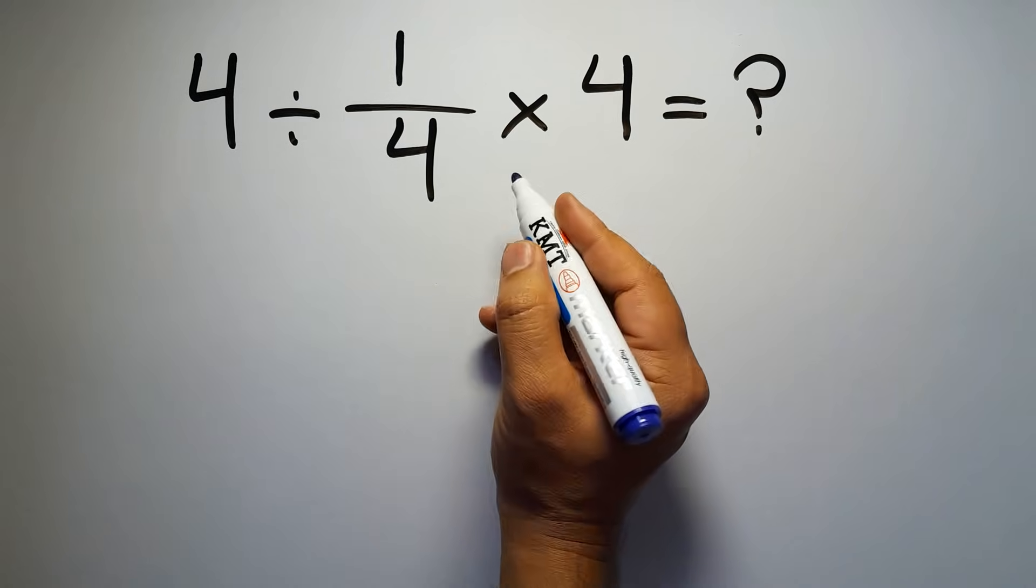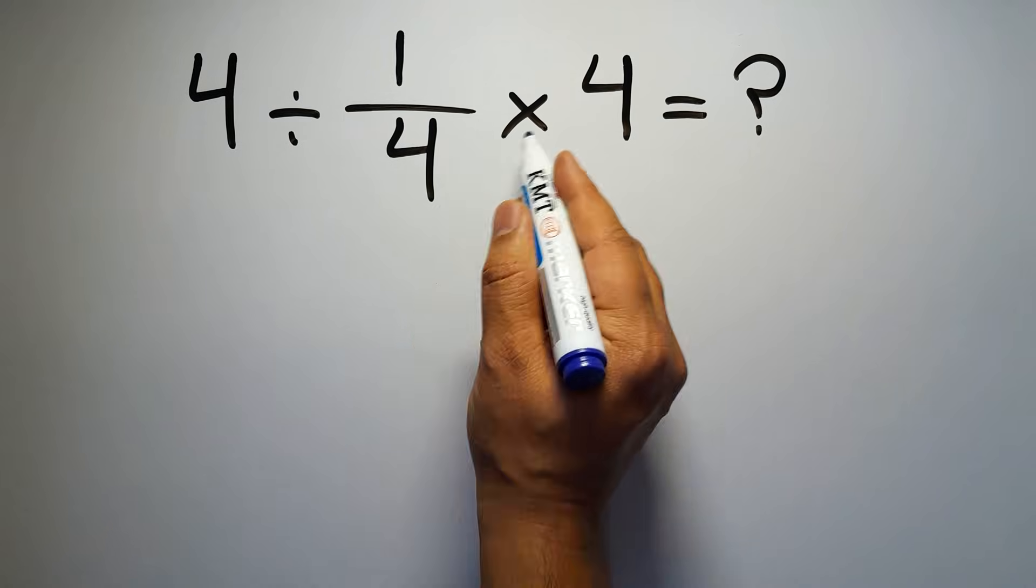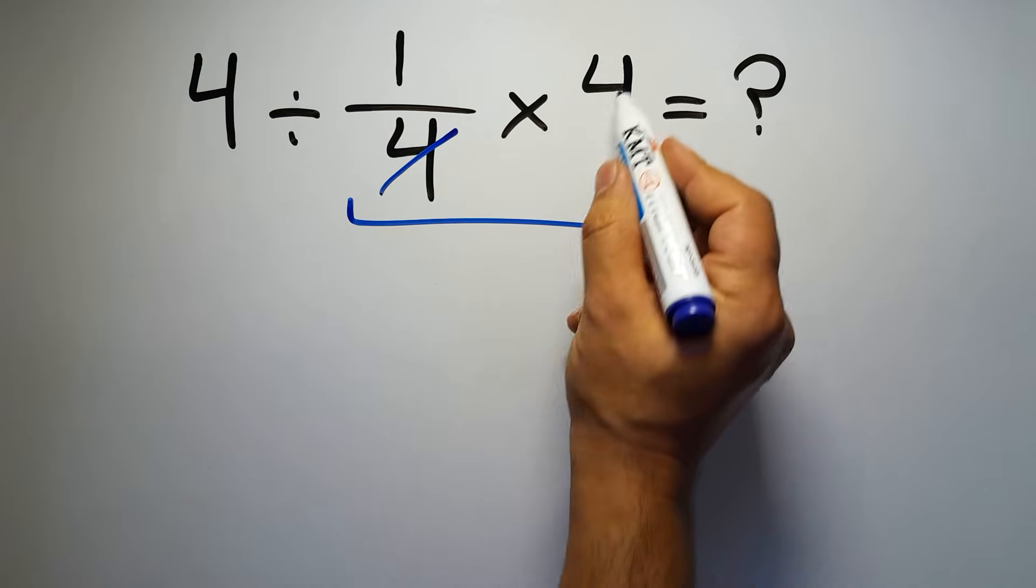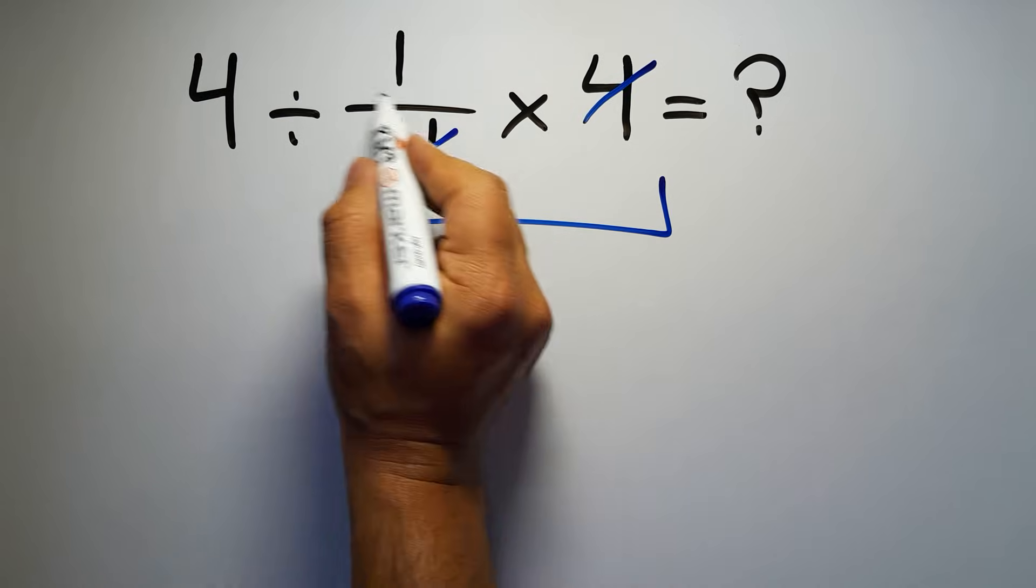First, we do this multiplication, 1 over 4 times 4. We can easily cancel this 4 and this 4, so here we have just 1.